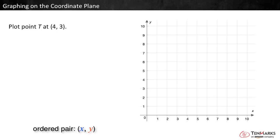One last problem. Plot point T at (4, 3). Since the x coordinate is always written first, we know we need to go four units along the x axis. Start at the origin and count over four.